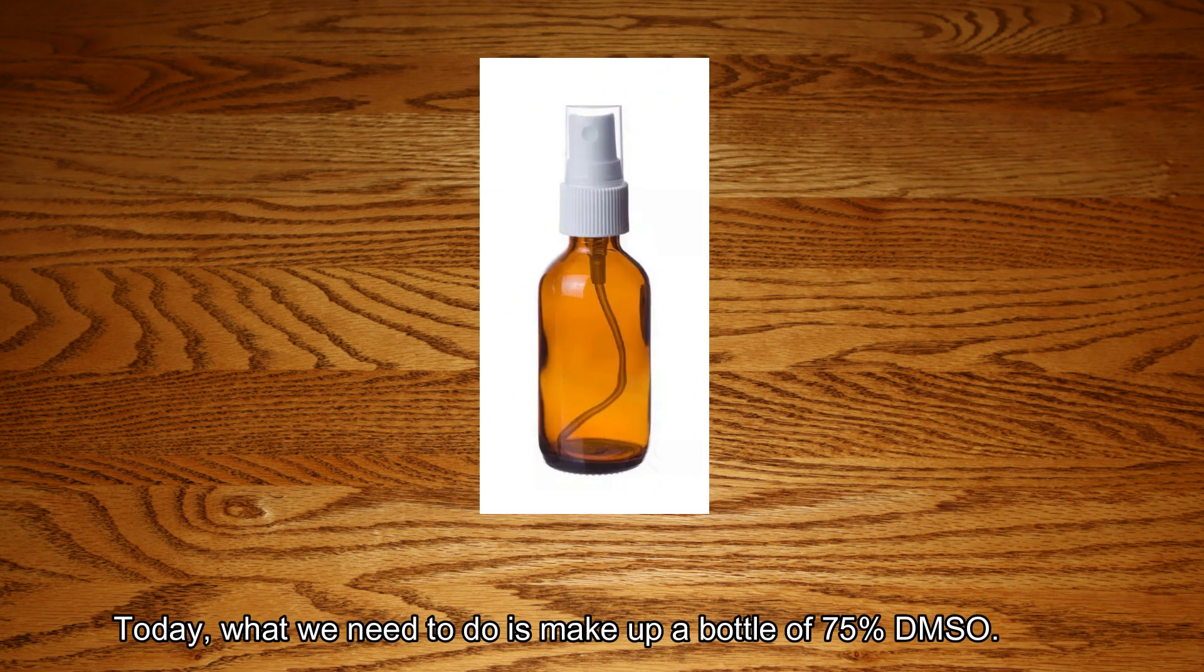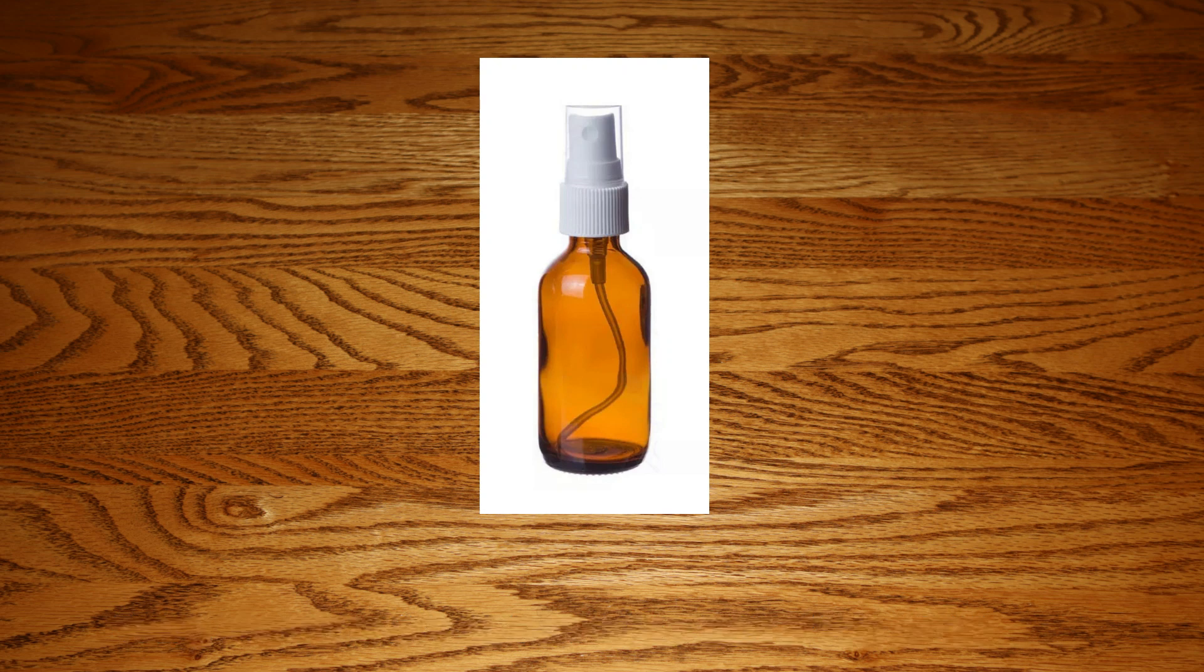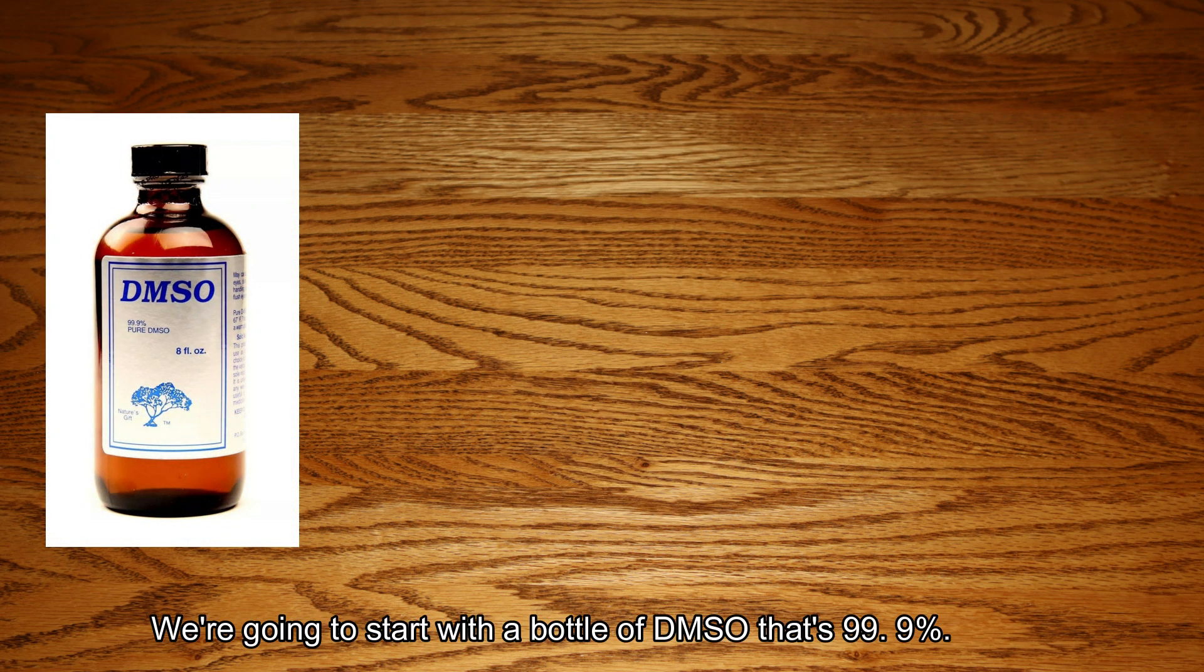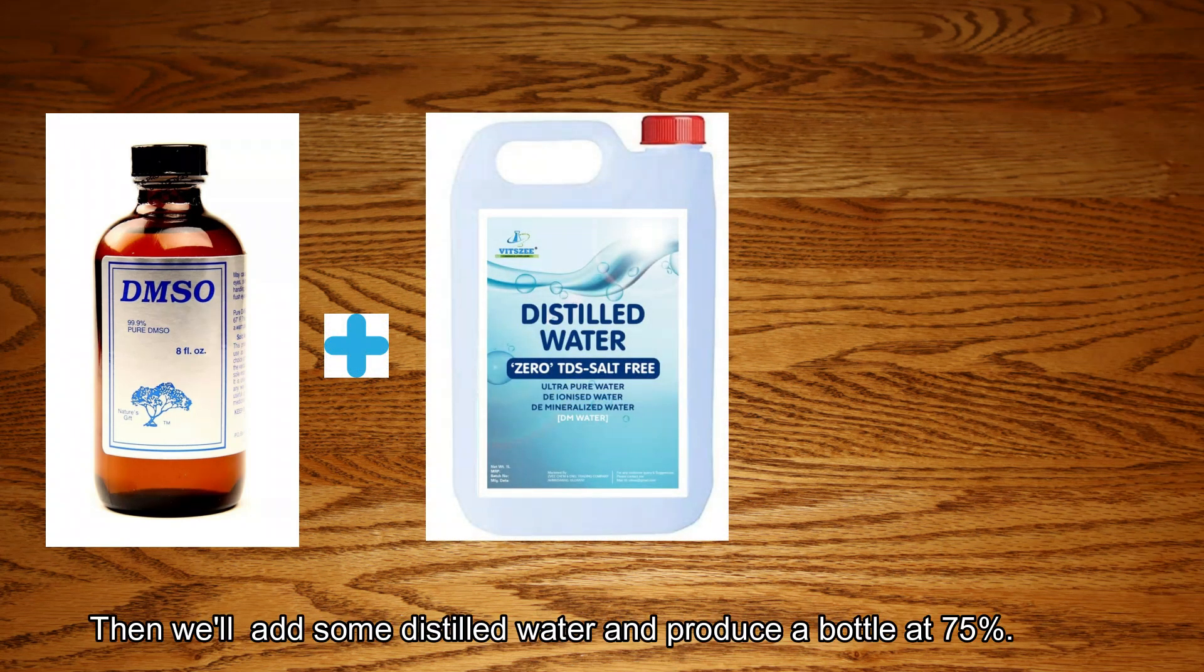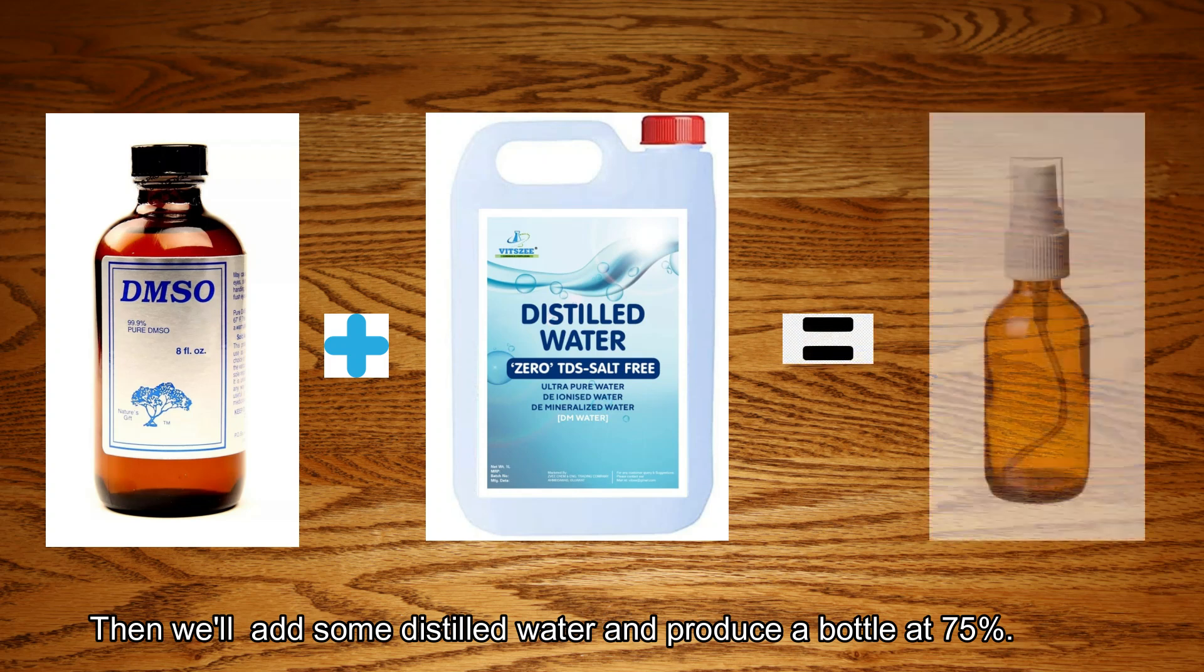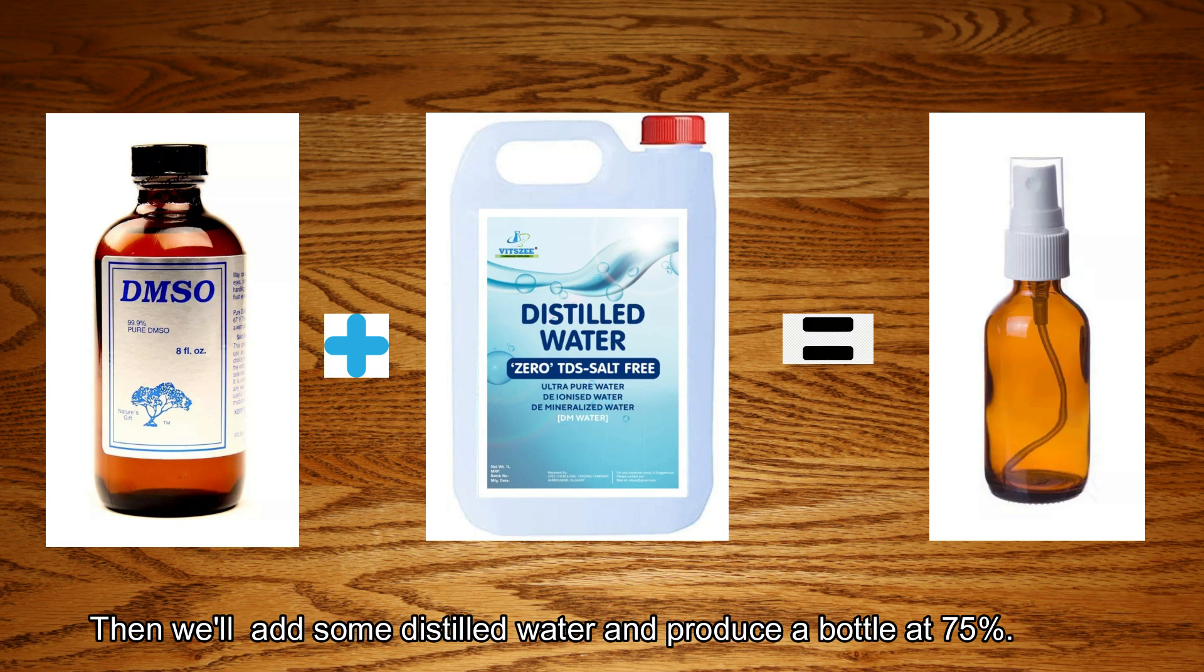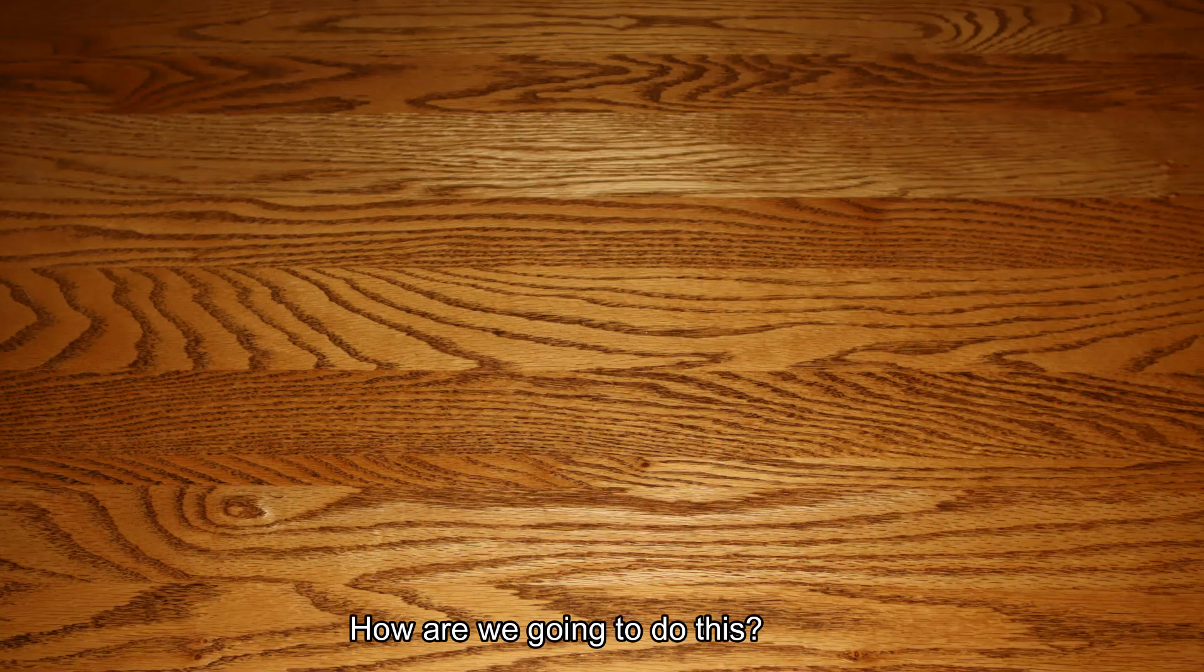Today what we need to do is make up a bottle of 75% DMSO. We're going to start with a bottle of DMSO that's 99.9%. Then we'll add some distilled water and produce a bottle at 75%.